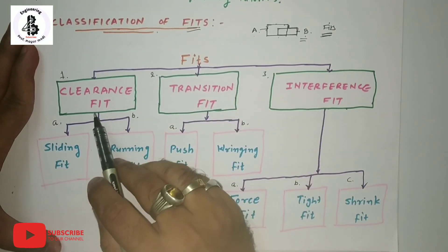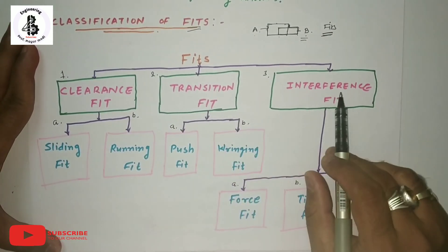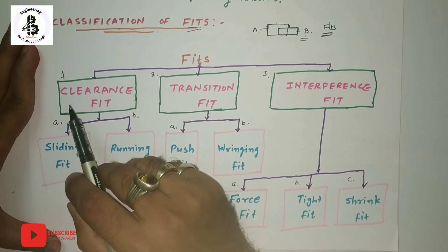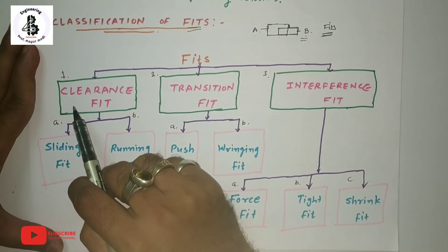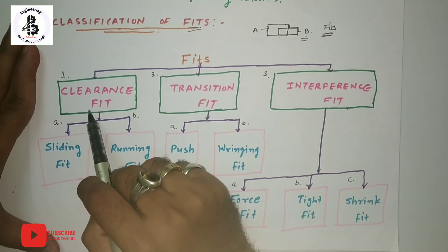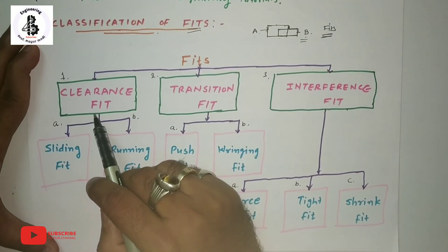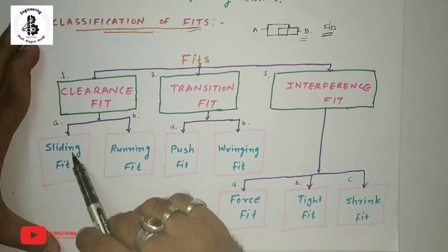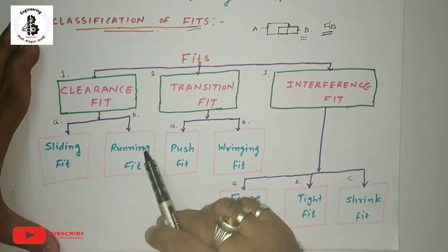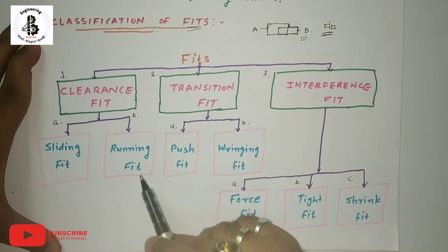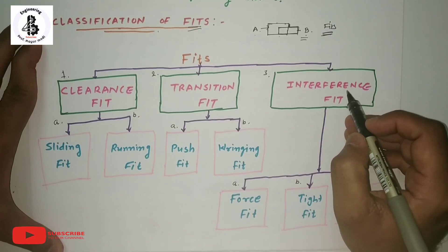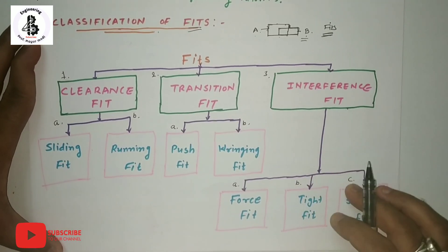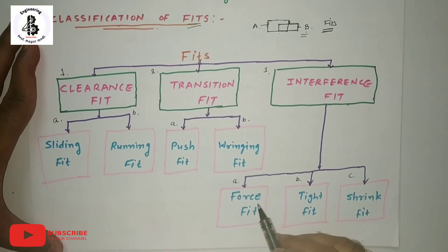In my past lectures I already explained the clearance fit — how it is used in different applications for assembly of A and B — and its sub-types such as sliding fit and running fit with examples. In this lecture I would like to explain only about interference fits.